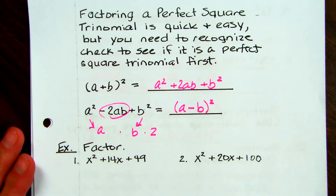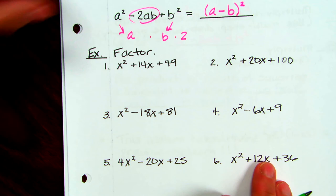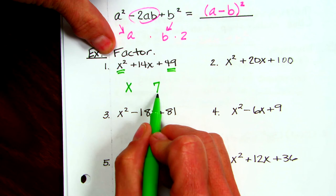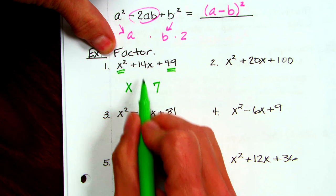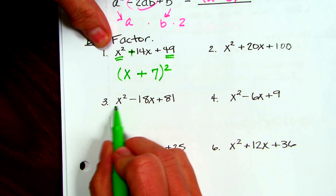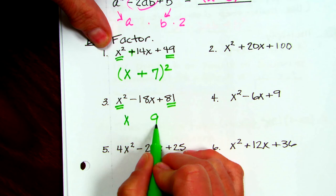Let's go through three problems. X squared plus 14X plus 49 — X squared is a perfect square, 49 is a perfect square. The square root of X squared is X, the square root of 49 is 7. X times 7 times 2 is 14X, so it factors into X plus 7 squared. Next, X squared minus 18X plus 81 — X squared and 81 are perfect squares. Square root of 81 is 9; X times 9 times 2 is 18X. Since it has a minus, it factors into X minus 9 squared. For 4X squared minus 20X plus 25: square root of 4X squared is 2X, square root of 25 is 5, and 2X times 5 times 2 is 20X, so it factors into 2X minus 5 squared.